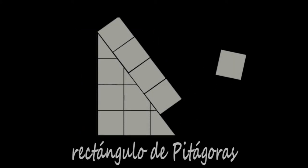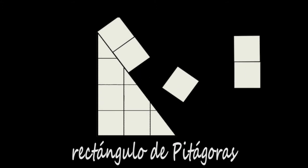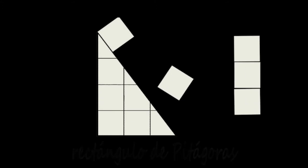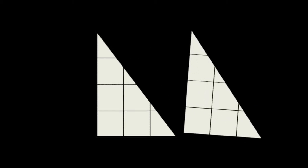El rectángulo de Pitágoras es el resultado de yuxtaponer por su hipotenusa dos triángulos rectángulos de proporción 3, 4, 5. Produce un rectángulo de proporción 4 a 3, cuyo cociente es 1,3 periódico.